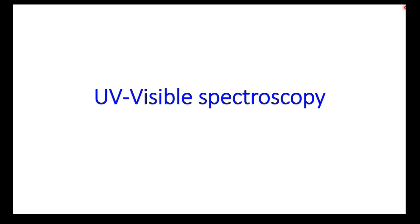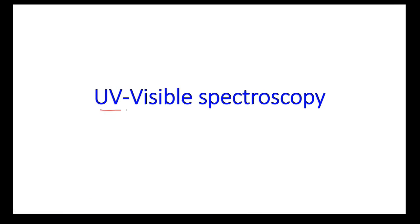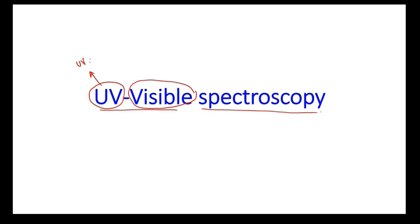Good evening, everyone. Today we will start with the next topic: UV-visible spectroscopy. As the name suggests, in this spectroscopic method, we have two types of electromagnetic radiations which are involved. The first one is UV radiations and the second one is visible light.